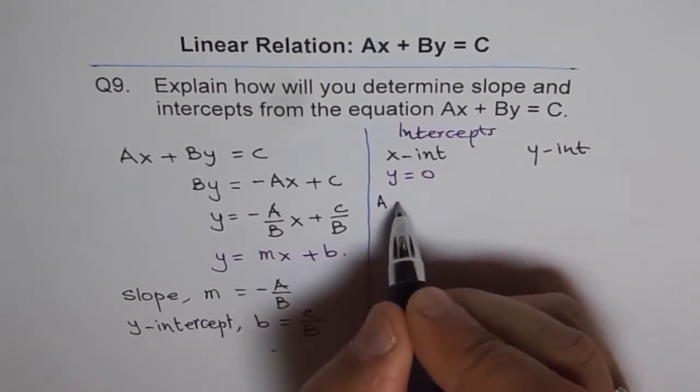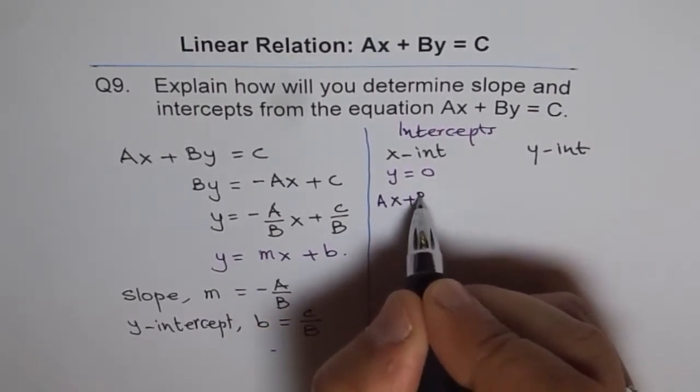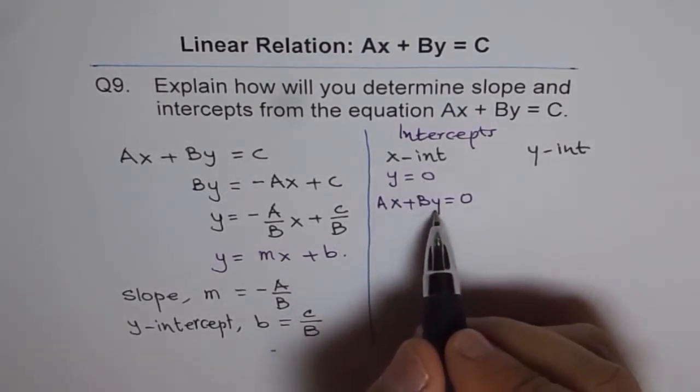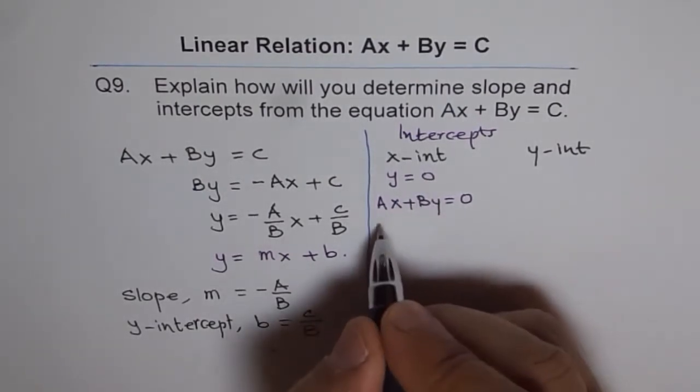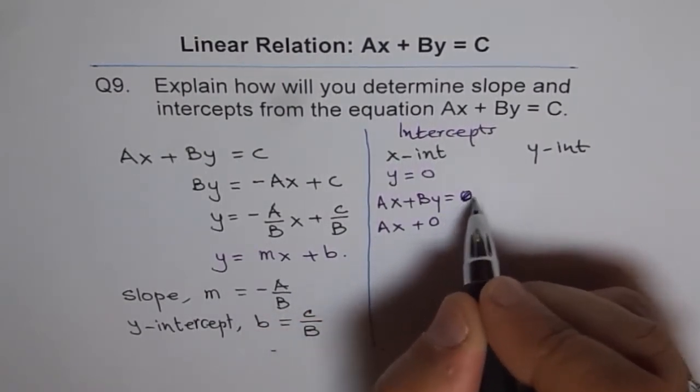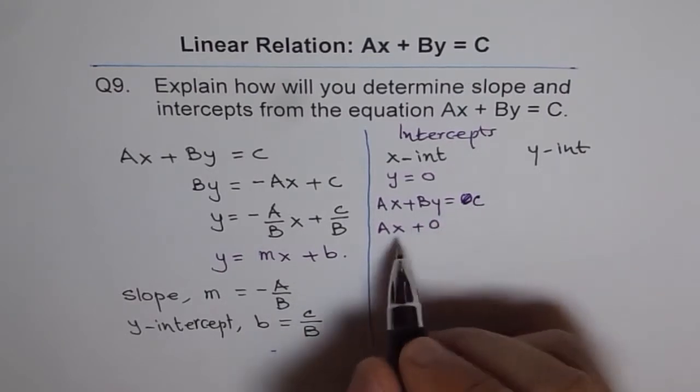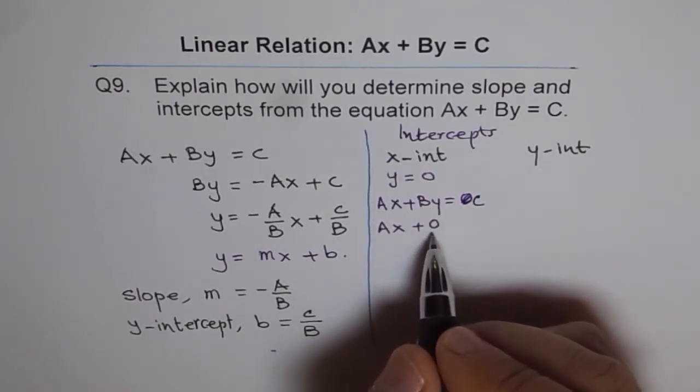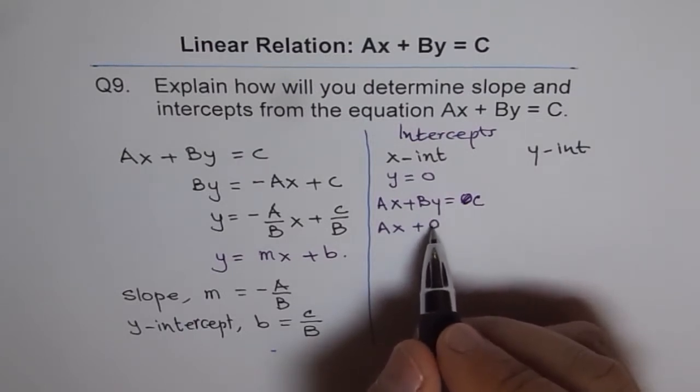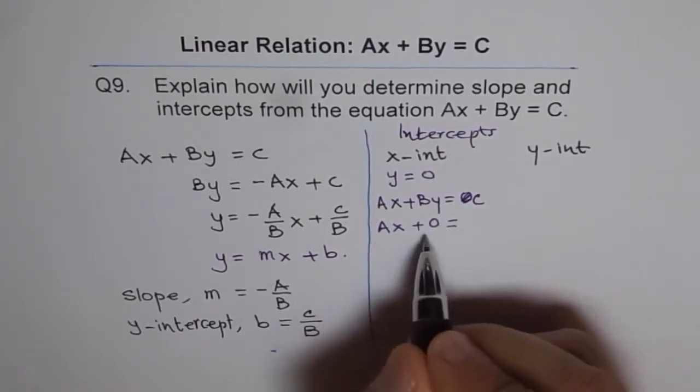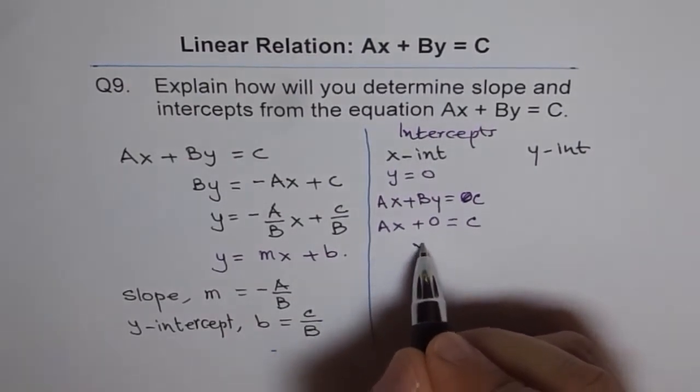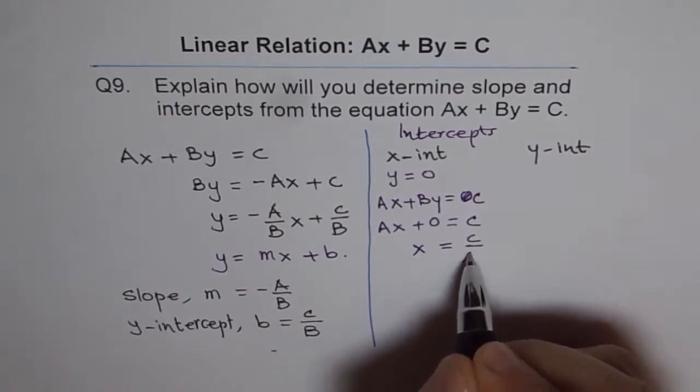So if I write this equation AX plus BY equals to C and make Y as 0, what happens? If Y is 0, then I get AX plus 0. The second term becomes 0. Anything times 0 will be 0. So we get AX equals to C. And X will be equals to C divided by A.